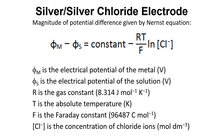The magnitude of this potential difference is given by the Nernst equation. The particular form shown here is: phi_M, the electrical potential in the metal wire, minus phi_S, the electrical potential in the solution, equals a constant minus RT over F times the log of the chloride ion concentration.